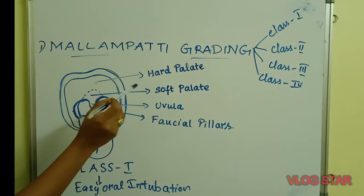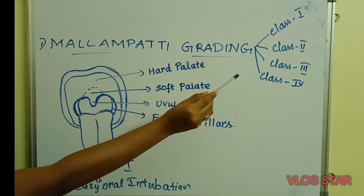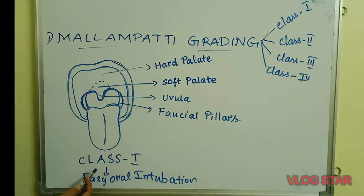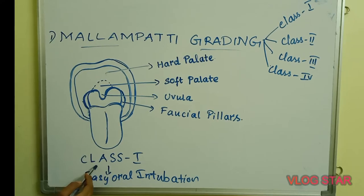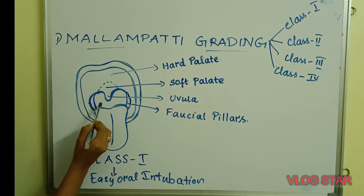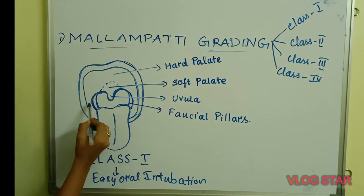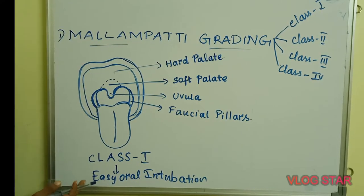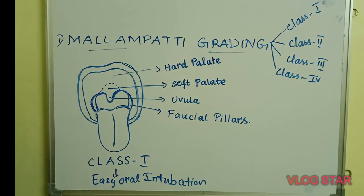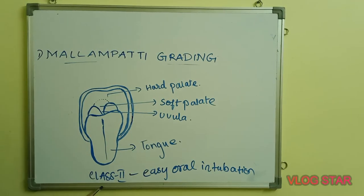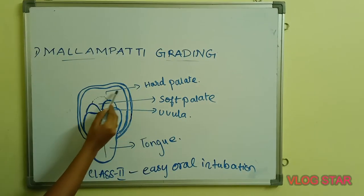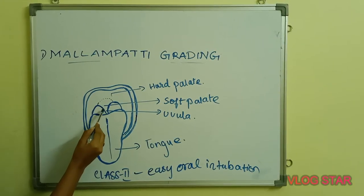Mallampati grading is classified into Class 1, Class 2, Class 3, and Class 4. In Class 1, the structures visualized are the hard palate, soft palate, uvula, and faucial pillars. Class 1 is associated with easy oral intubation. In Mallampati Class 2, the structures visualized are the hard palate, soft palate, and base of the uvula.